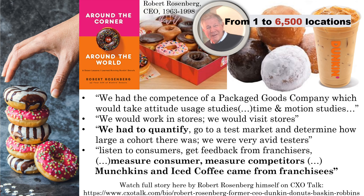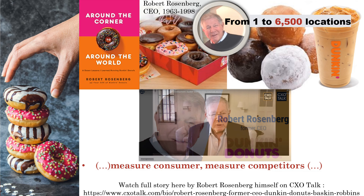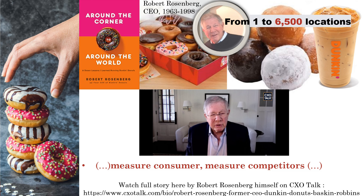Robert Rosenberg led Dunkin' Donuts from one to 6,500 locations. In this interview, he speaks of being a very keen observer of the market and competitors, doing attitude usage studies, cohort analysis, test markets, and surveying his customers and franchisees — basically having the same competence as a consumer packaged goods company. Munchkins and Iced Coffee, for instance, originated from using this approach. Intently watch the consumer, talk to the consumer, measure the consumer, measure the competition. It's continuing and it's changing rapidly all the time.